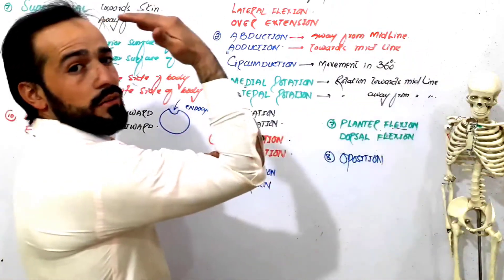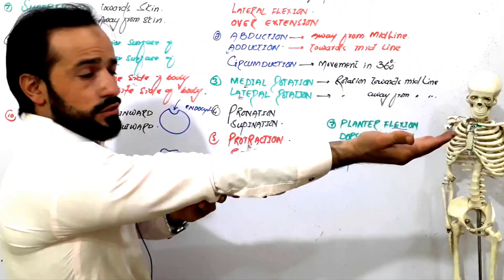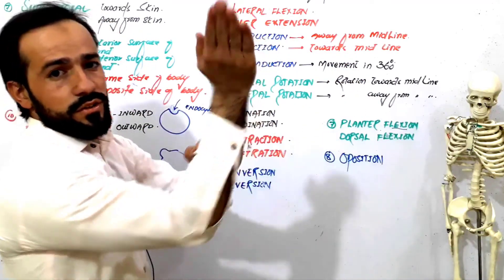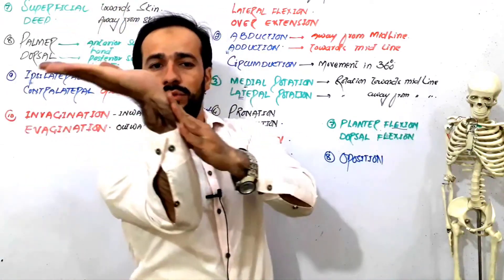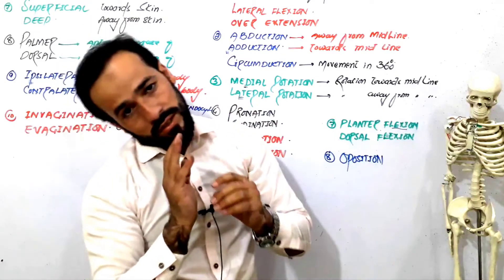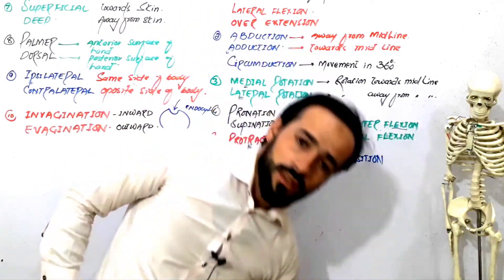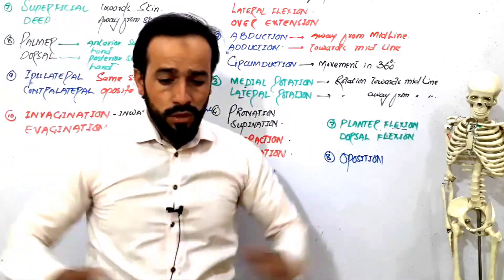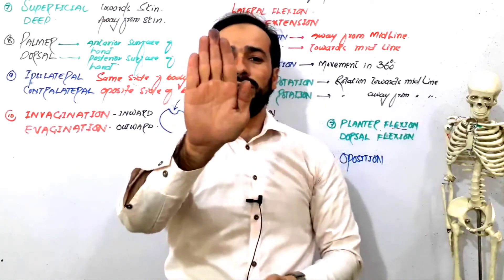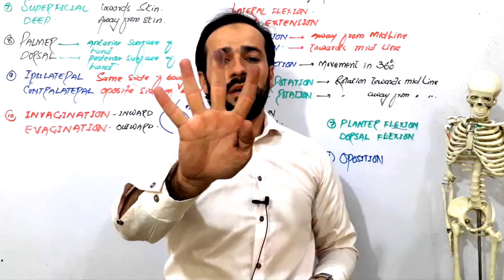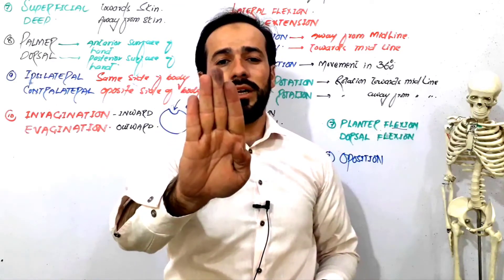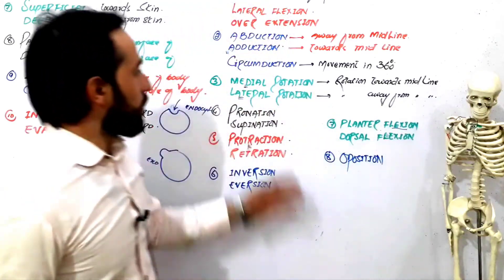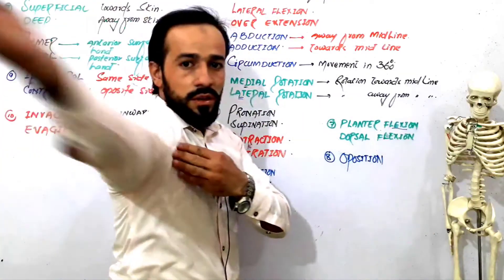Let's repeat all these: decreasing the angle is flexion, increasing the angle is extension, increasing the angle beyond normal is called overextension — flexion, extension, overextension. Then there is lateral flexion. Then there is abduction — moving away from the midline — and adduction — moving toward the midline. Then there is circumduction.